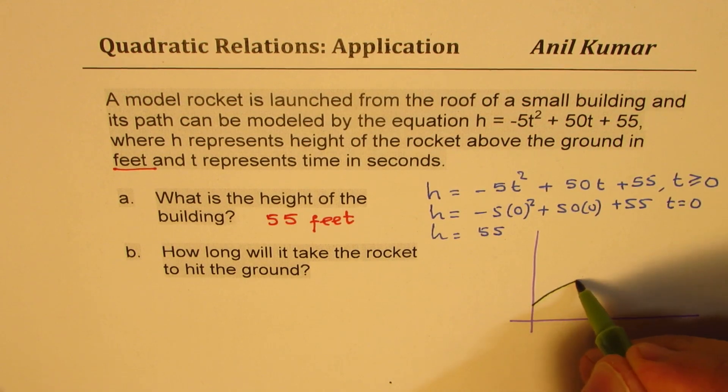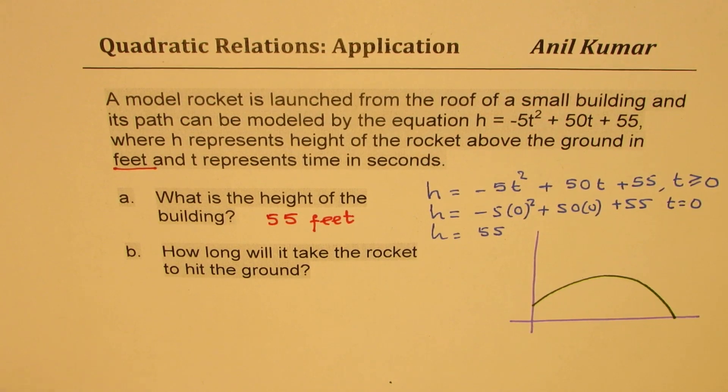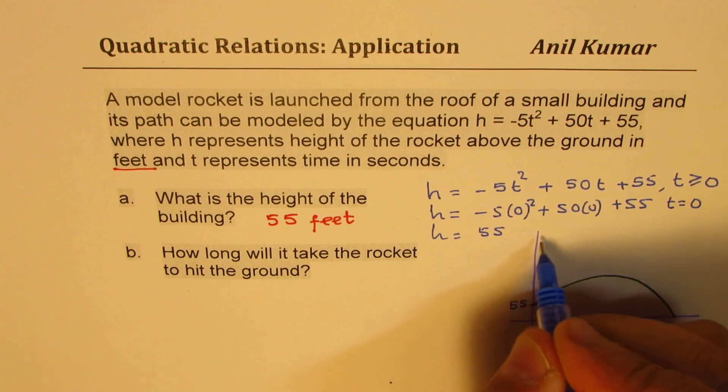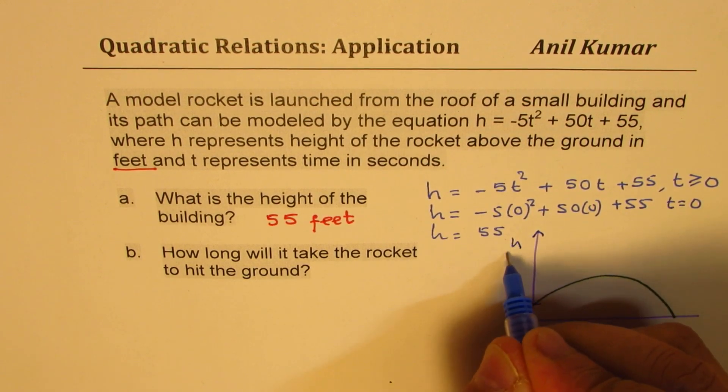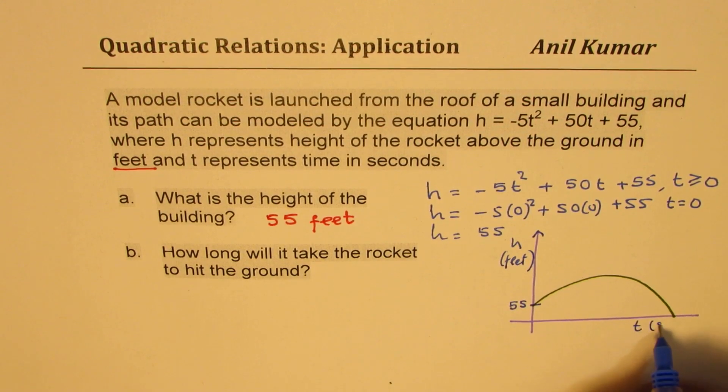rocket is launched and it just goes down like this. We just found that this particular height here is 55. So here we have height in feet and time T is in seconds.